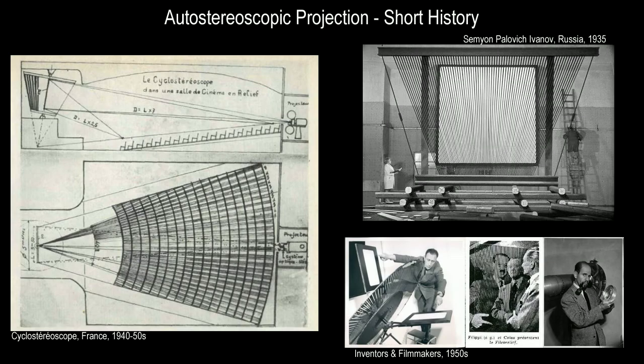For almost a century, inventors and enthusiasts have designed and built 3D projection and cinema systems. Many early systems relied on variations of parallax barriers, implemented as huge, mechanically moving constructions.